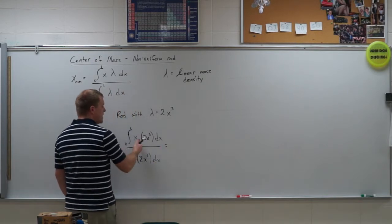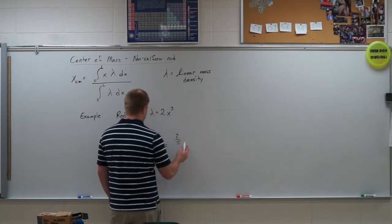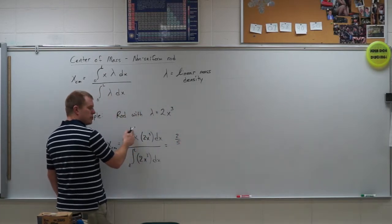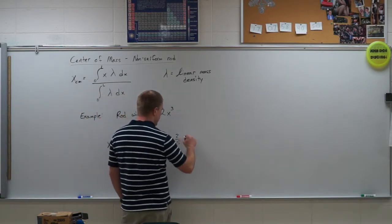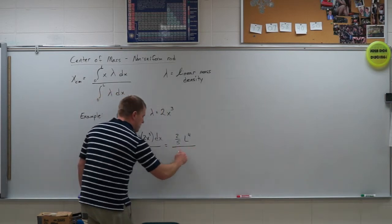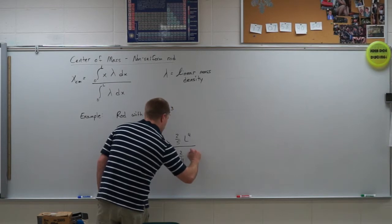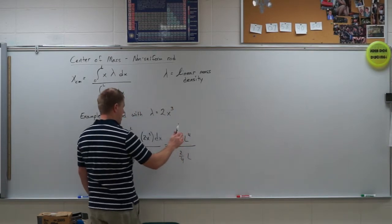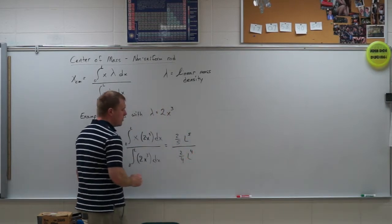So, we go ahead and we take that integral, and so we're left with 2/5, and then we'll just do our definite integral. So, I've got L and 0. So, I'm just going to get 2/5 L to the 4th minus 0, all divided by. On the bottom, I get 2/4 L to the, oops, this is L to the 5th, I'm sorry. L to the 5th divided by L to the 4th.